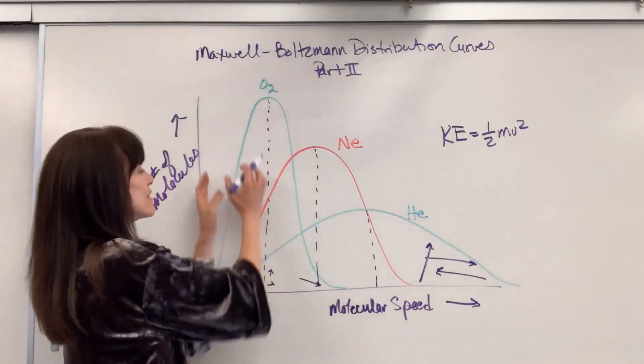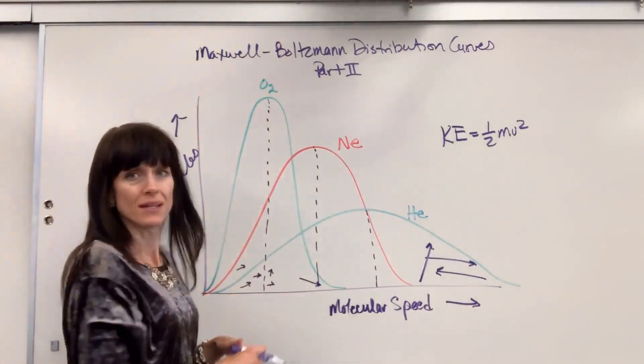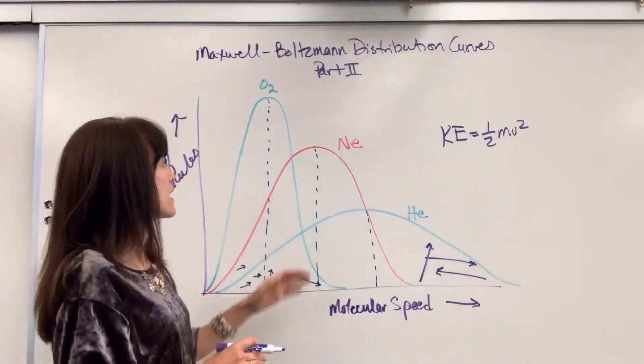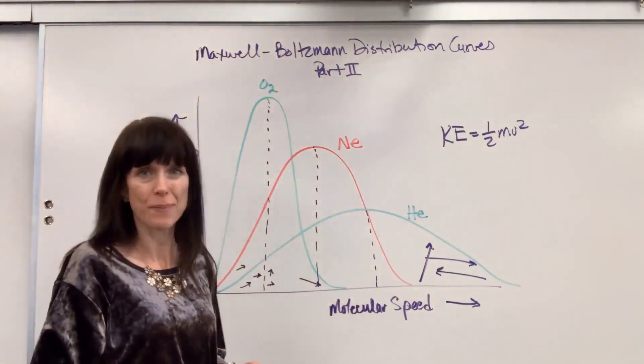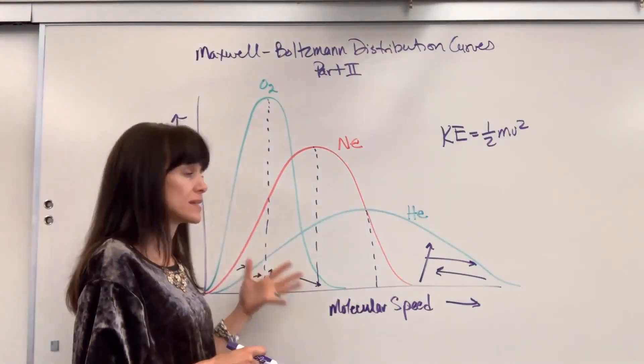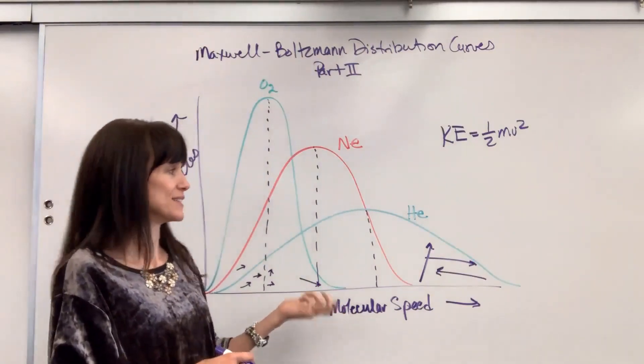Whereas on this one, you have a lot in that slow and some in the middle. To find the average, you just go to the apex. So that is interpreting and reading distribution curves.